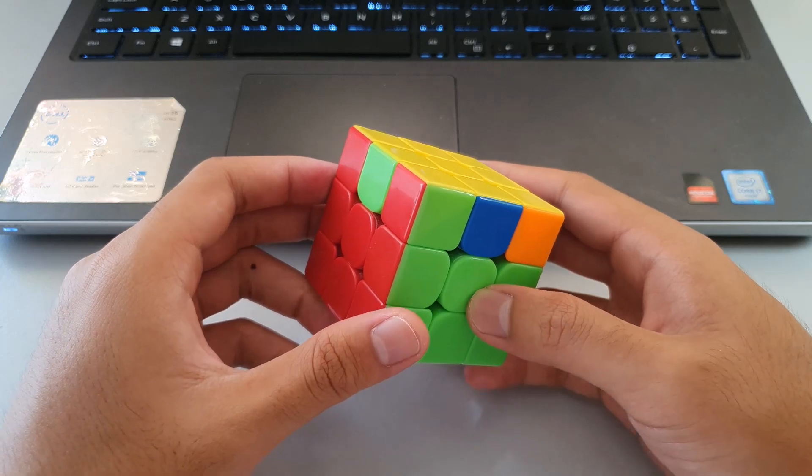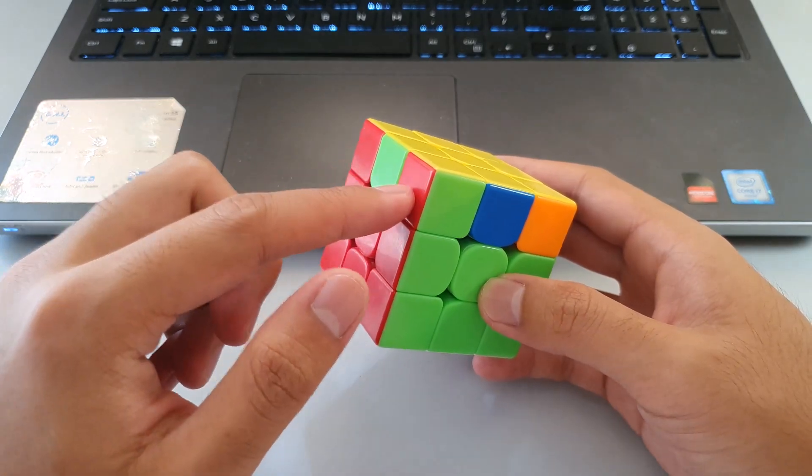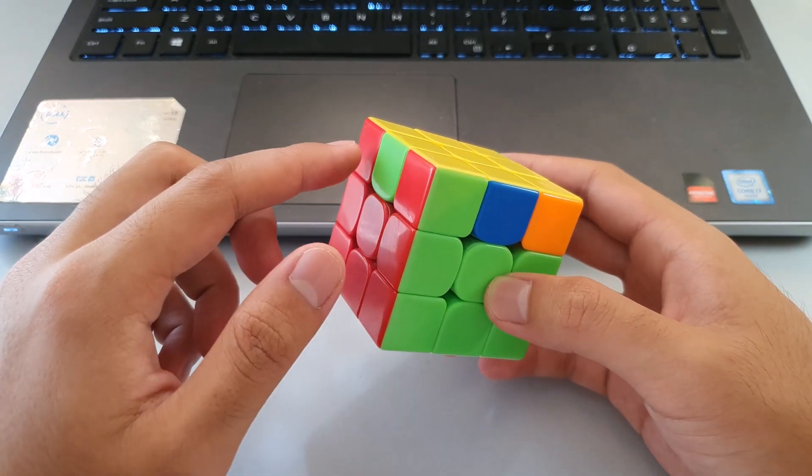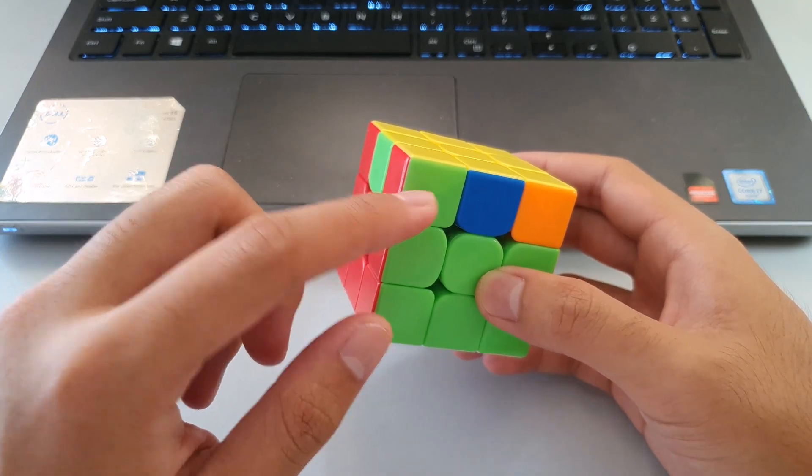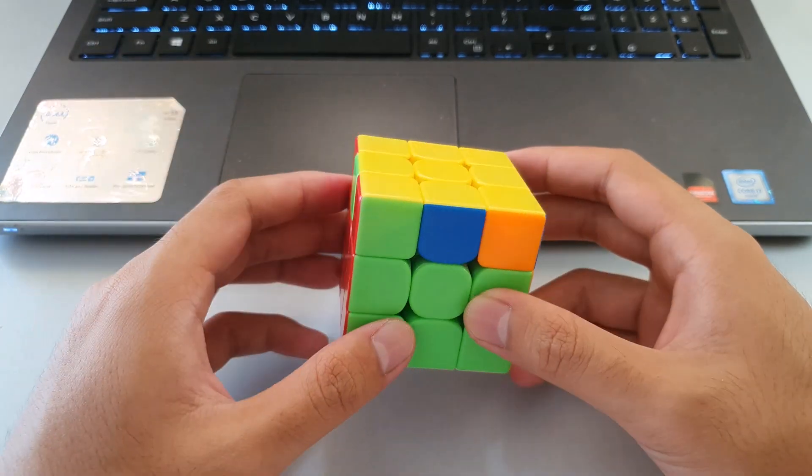The way to tell that this is a G perm, not an R perm, is that this checkerboard pattern here goes for four stickers. So the red, green, red, green goes only for four stickers. If it's four stickers, it's a G perm.